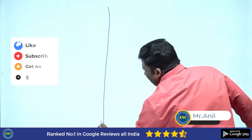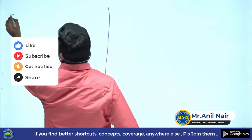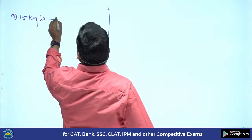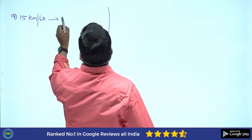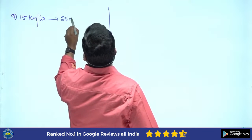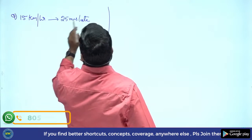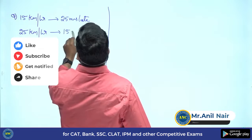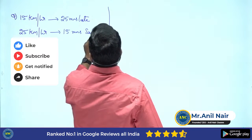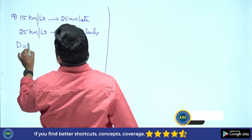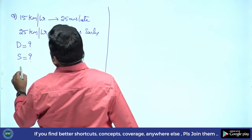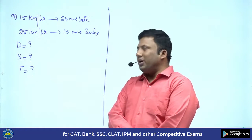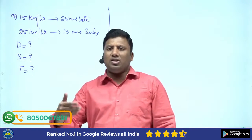Let us do two more problems so this concept becomes very clear. Question: 15 km/h — 25 minutes late; 25 km/h — 15 minutes early. We need to calculate actual distance, actual speed, and actual time period.